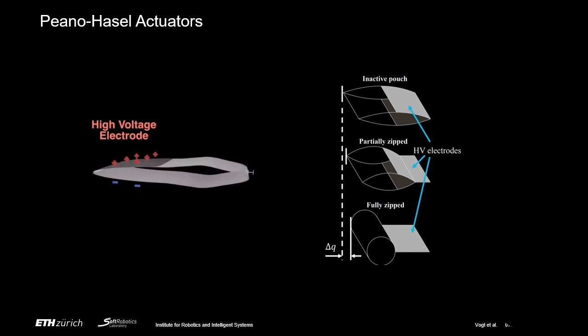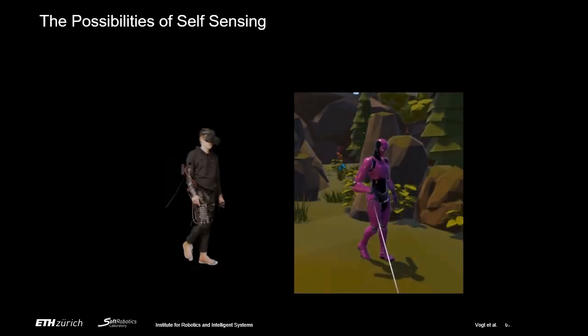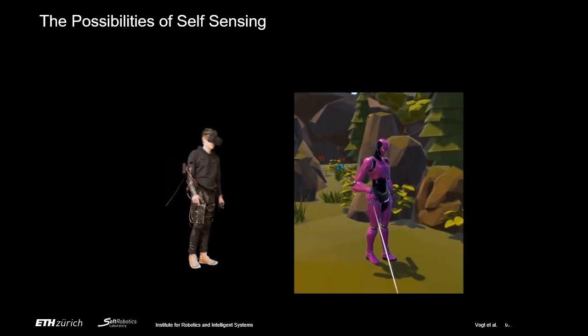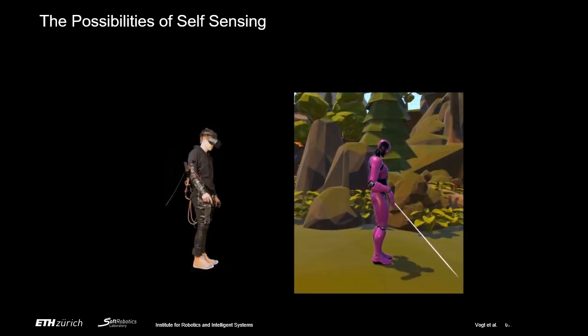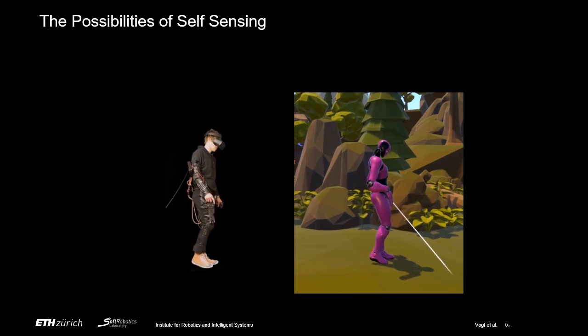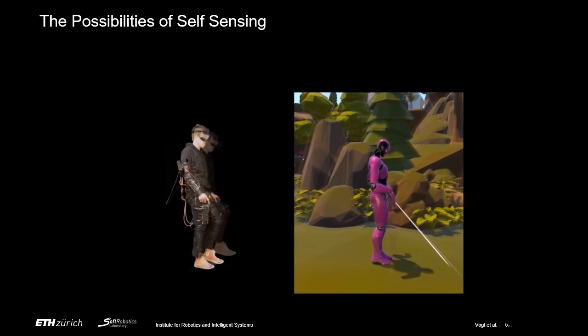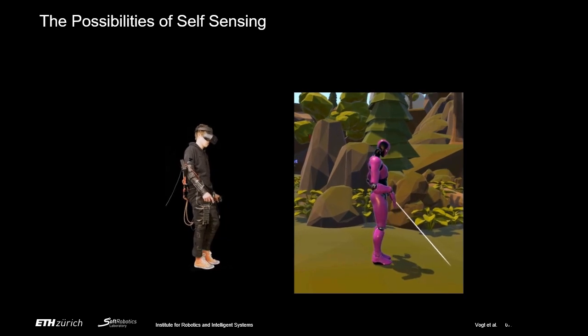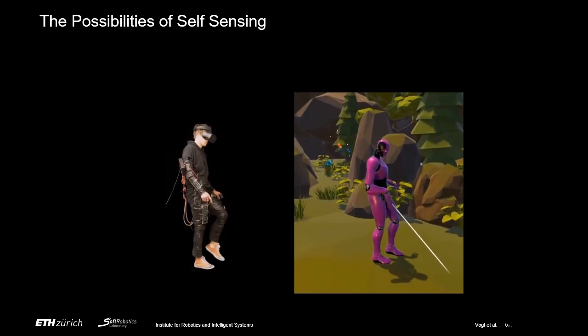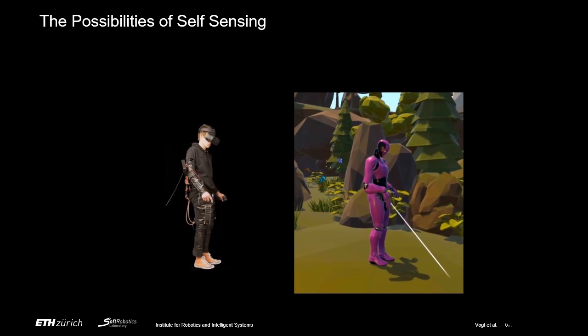The electrodes on a Peano-HASEL actuator act as a variable capacitor, the capacitance of which is dependent on the electrode's position relative to each other. This means that the capacitance would change as the actuator deforms. As such, HASELs are able to provide feedback about their deformation without the need for external sensors, which allows for more low-cost, power-efficient and space-efficient designs that can be used in untethered and wearable robotic applications.